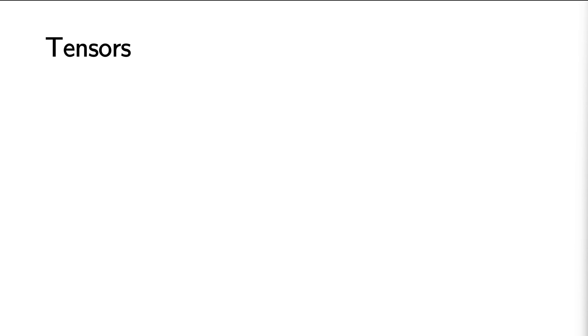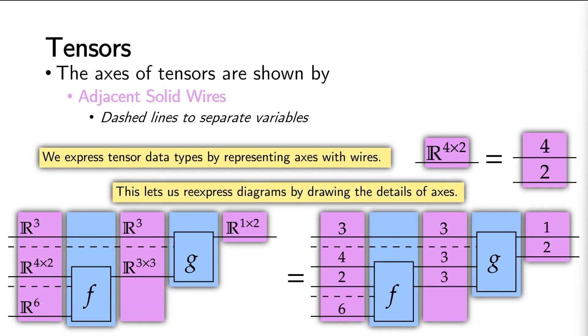Tensors are shown by placing adjacent solid wires. So, an R4 by 2 matrix is shown by a wire labeled 4 placed next to a wire labeled 2. This means that the previous algorithm, if all the data types are tensors, can be re-expressed in the following form.